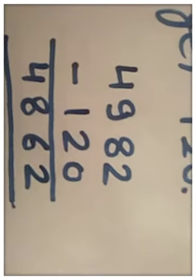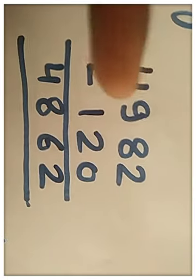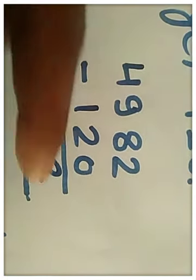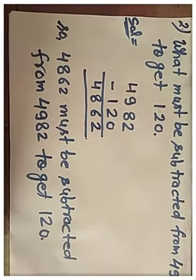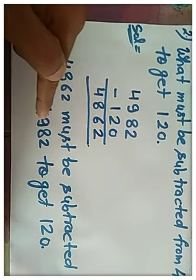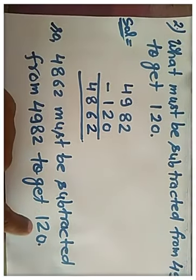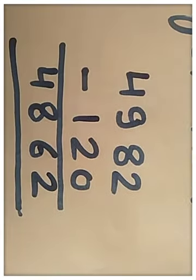Now if we subtract 120 from 4,982 then we will get 4,862. So if we subtract this 4,862 from 4,982 then we will get 120. So the answer is 4,862.